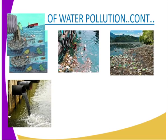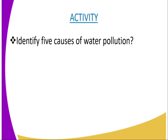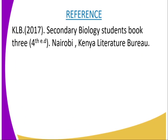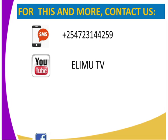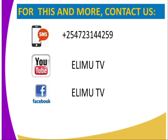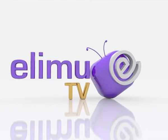For this lesson's activity, you are required to identify causes of water pollution. You can refer to KLB Secondary Biology Students Book 3, 4th edition, published by Kenya Literature Bureau in Nairobi. For this and many more biology lessons, you can send us an SMS through the number on our screen, subscribe to our YouTube channel Elimu TV, our Facebook page Elimu TV, or tweet us at ElimuTV underscore Kenya. Subscribe to all these channels to enjoy many more biology lessons. Thank you.